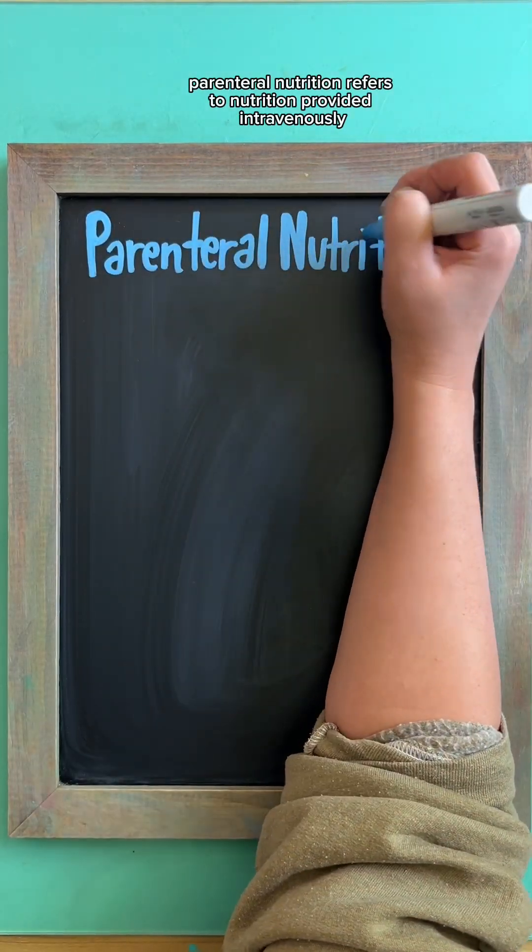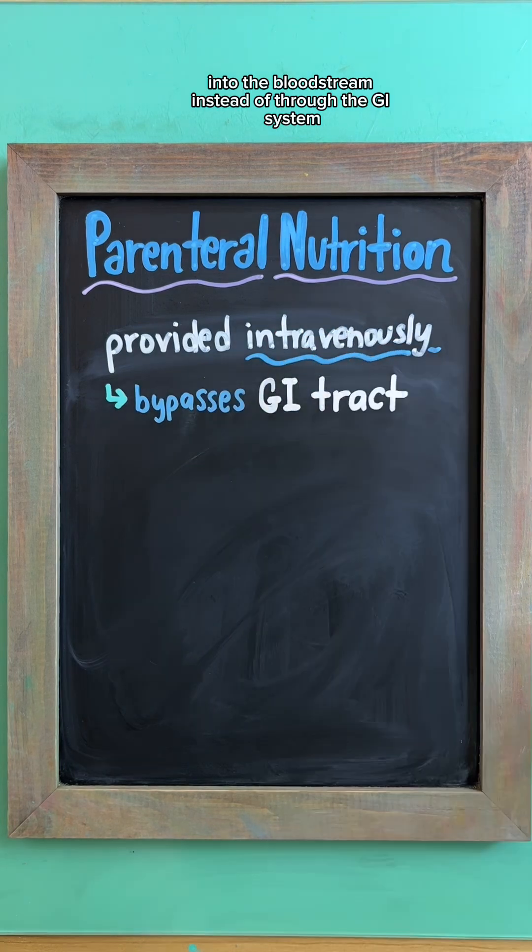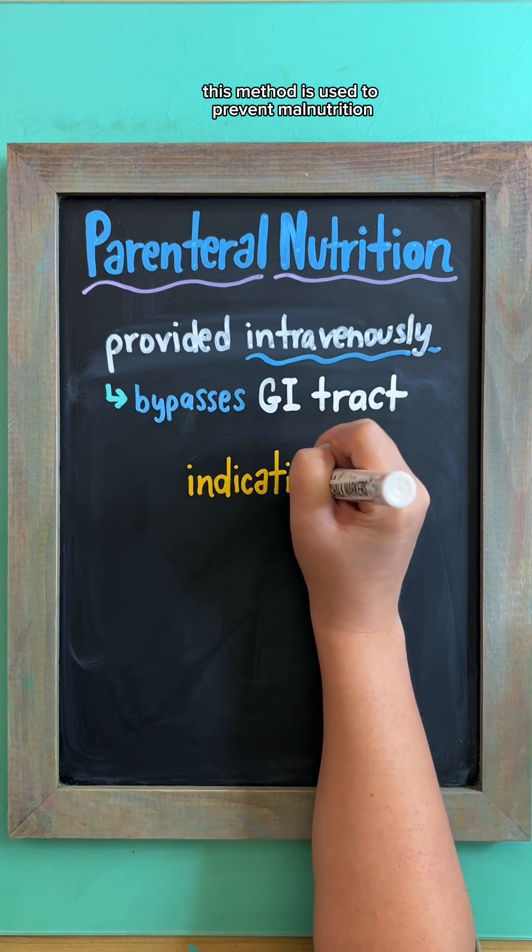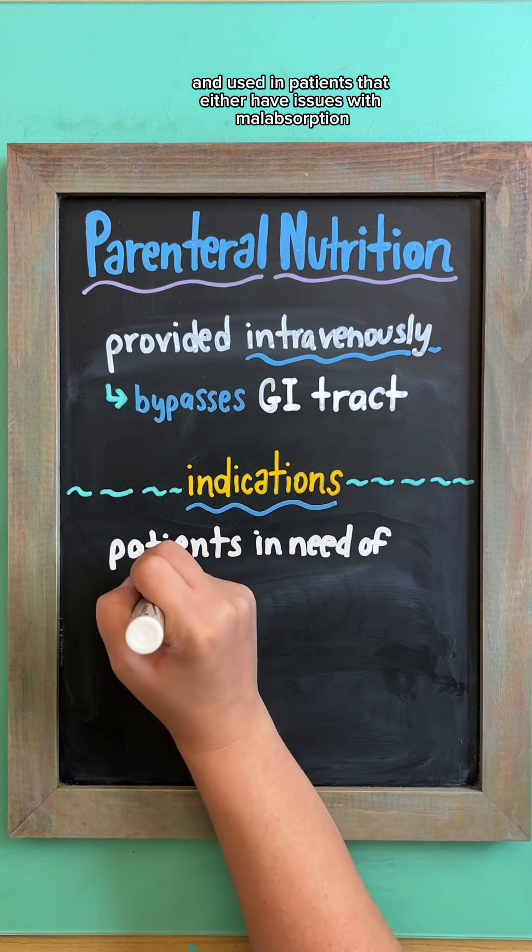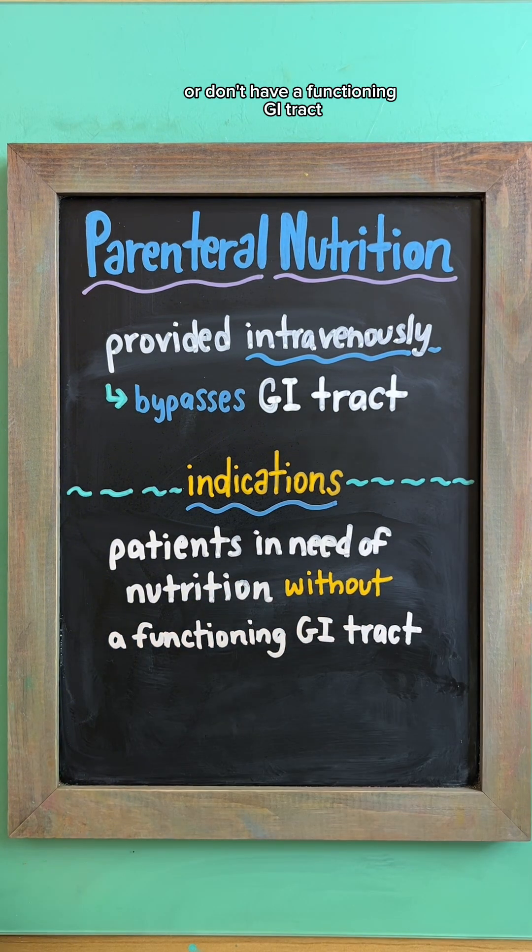Parenteral nutrition refers to nutrition provided intravenously into the bloodstream, instead of through the GI system. This method is used to prevent malnutrition and is used in patients that either have issues with malabsorption or don't have a functioning GI tract.